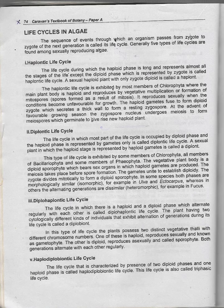Meiosis takes place before spore formation. The gametes unite to establish diploidy. The zygote then divides mitotically to form a diploid sporophyte.